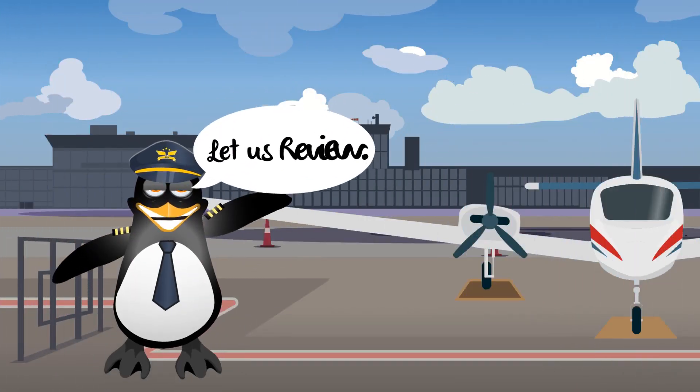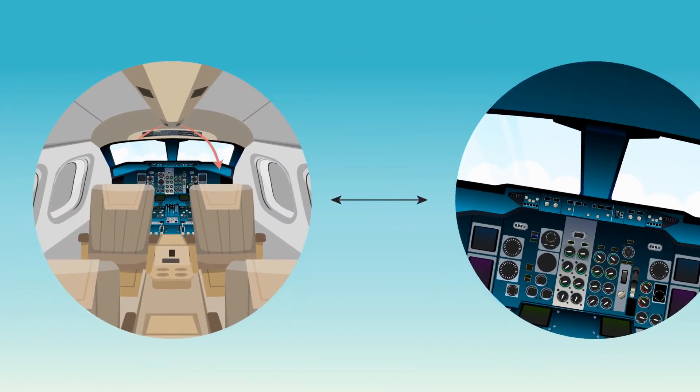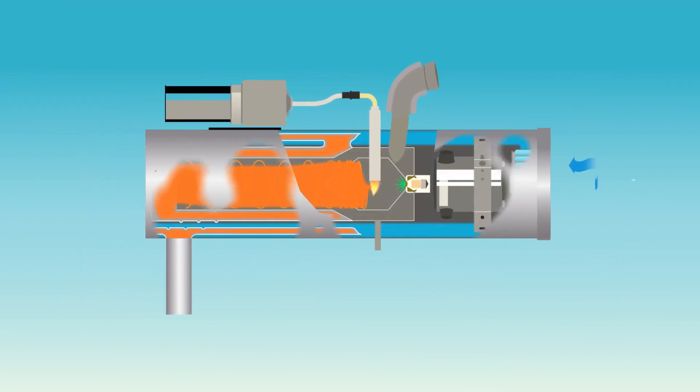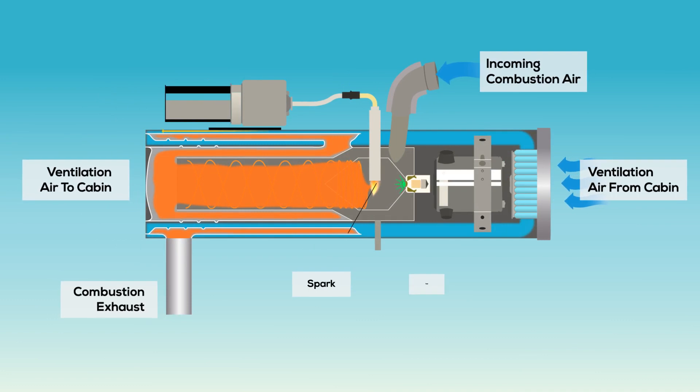Let us review. Combustion heater systems enable cabin heat for passenger comfort and windshield defogging. Combustion heater systems burn aircraft fuel in a combustion chamber to heat air flowing around the combustion chamber ducted to the cabin.